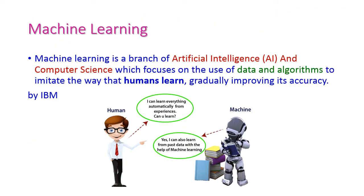The definition of machine learning: Machine learning is a branch of artificial intelligence and computer science which focuses on the use of data and algorithms to imitate the way that humans learn and gradually improving its accuracy, that is the accuracy of the ML algorithm. This is the definition given by IBM.